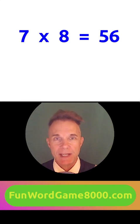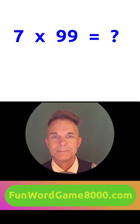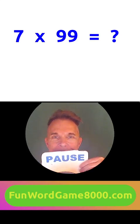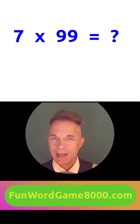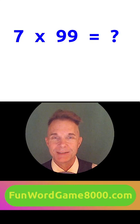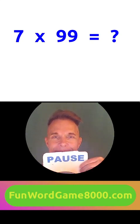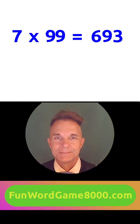Seven times eight equals fifty-six. I can help you. What is seven times one hundred? Seven times ninety-nine equals six hundred ninety-three.